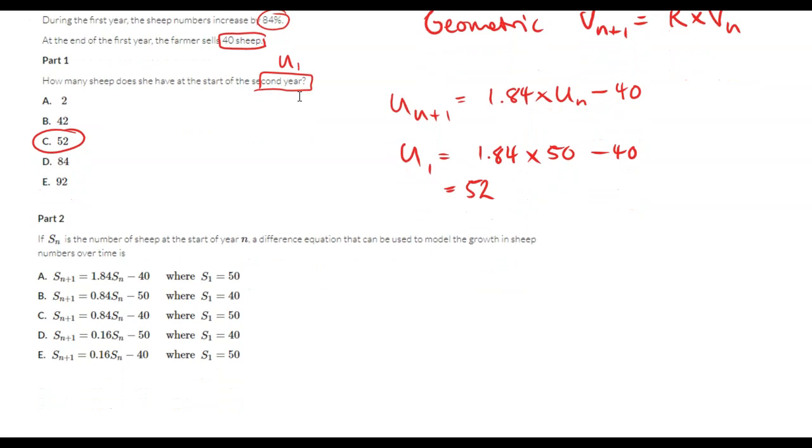For the next one, if sn is the number of sheep at the start of the year - they've used s instead of u - the difference equation that would model it is this first one here. They've used s1 instead of s0 but that's fine, so it's this one here.